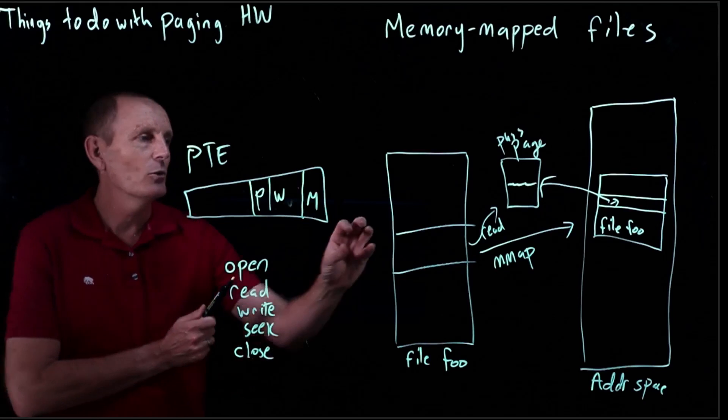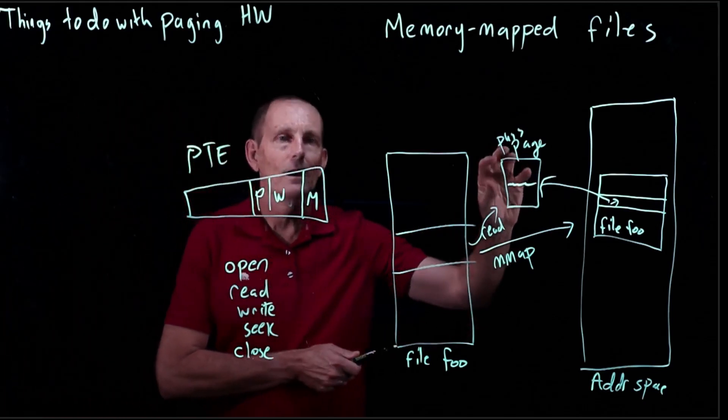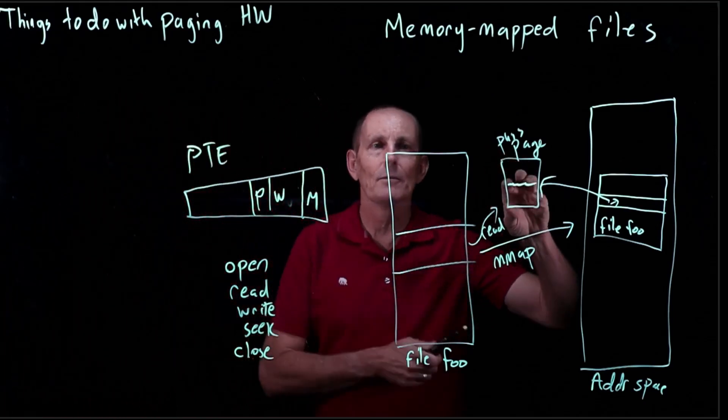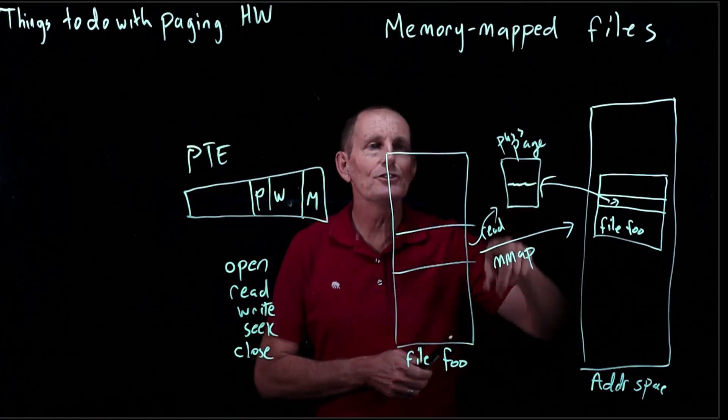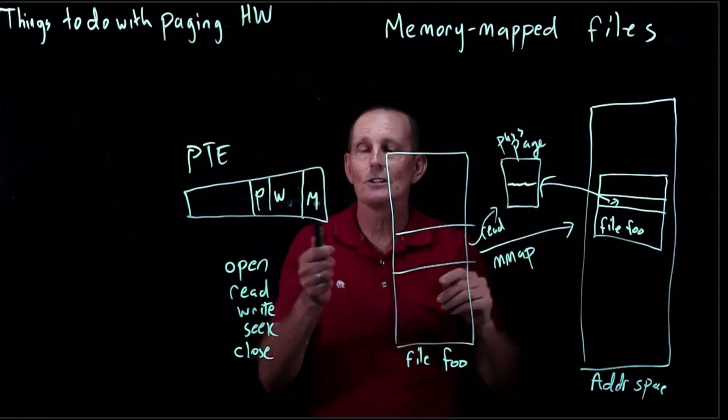So the kernel can then, when it loads a page from a file, clear the modified bit. And then if it ever needs to know whether this page has been modified, it can just look at the modified bit.